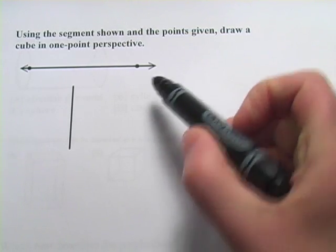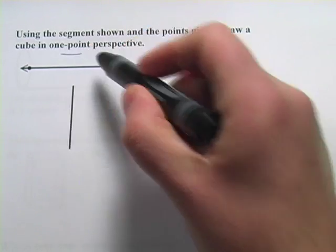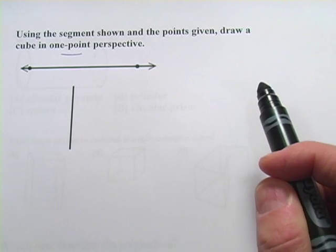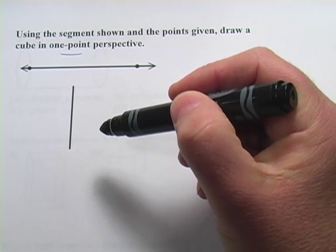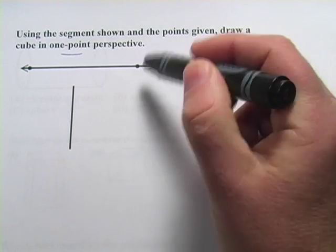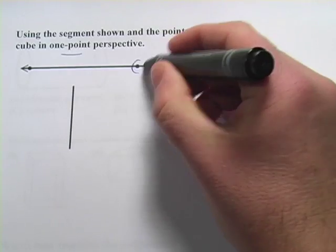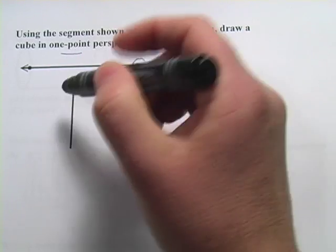They want us to draw a cube in one point perspective. And I'll show you how to draw in two point perspective as well. But let's answer this problem first. And they've given us a start with one line. With one point perspective, you're going to pick one of these points. I'm just going to pick this one.